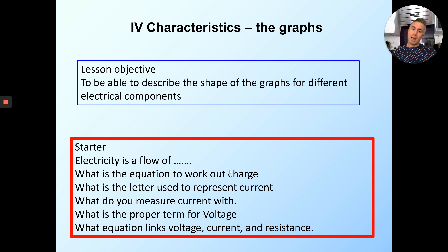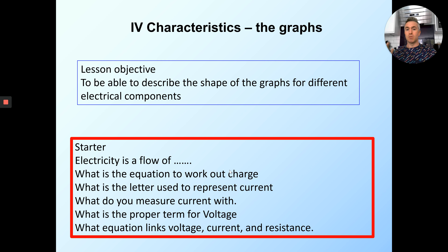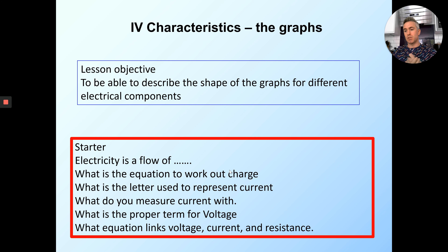Each component will have its own shape when you change the current or the voltage through it. So if you were to make a graph of how the current and voltage changes, it would be different for each component, and you can use these graphs to work out what component you have. But that's for the whole lesson. So let's start off with the starter questions.